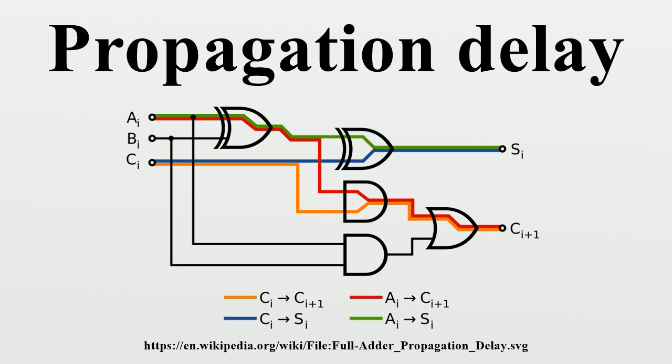In electronics, digital circuits, and digital electronics, the propagation delay, or gate delay, is the length of time which starts when the input to a logic gate becomes stable and valid to change, to the time that the output of that logic gate is stable and valid to change.